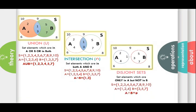We will now learn what different operations we have in set theory. The first operation is union. Set elements which are in either the first set, either the second set, or in both sets is called union. For example, set A = {1, 2, 3, 4} and set B = {1, 3, 5, 7}. The whole portion covered by A and B is called union, represented by the ∪ symbol.